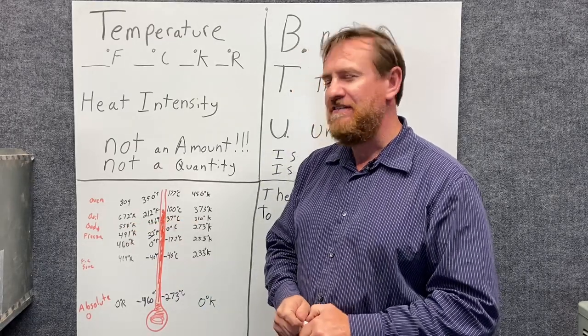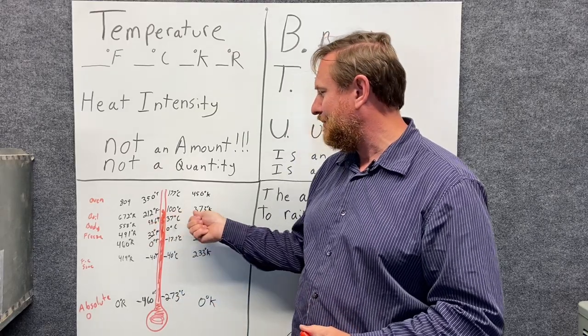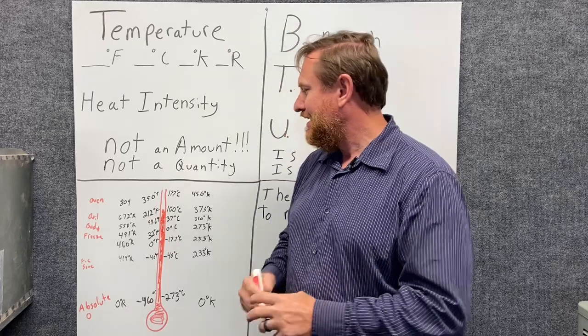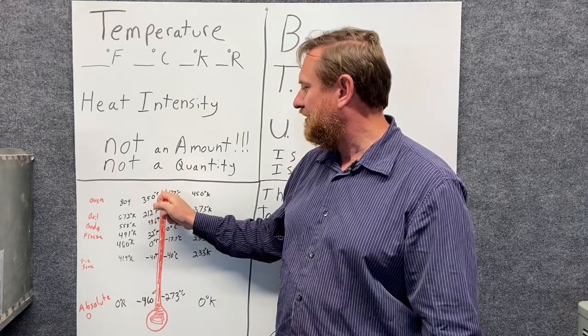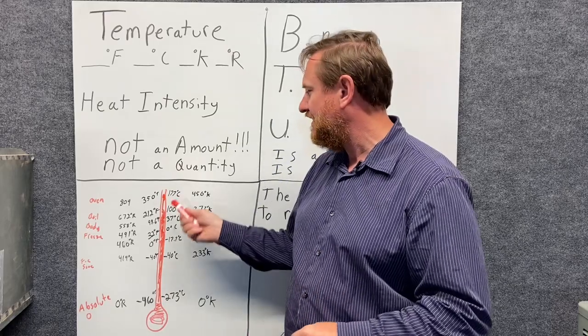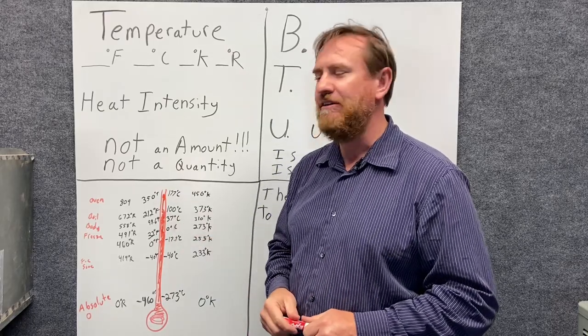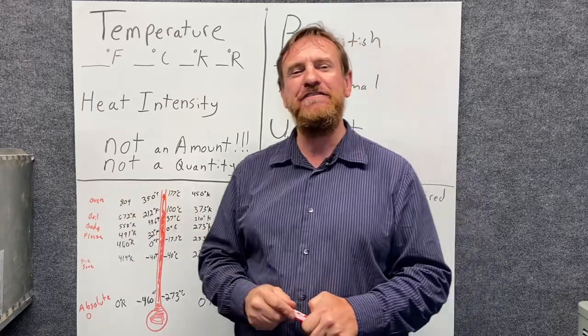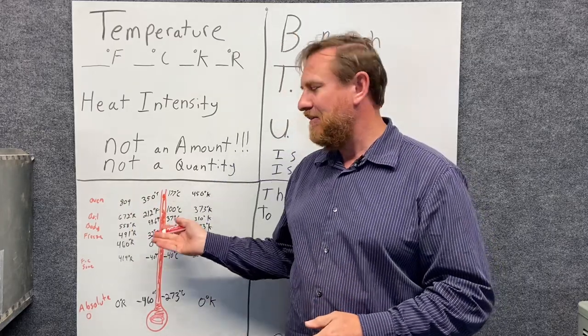Now if we wanted to put that in Rankine, that's 672 degrees Rankine. And that same exact boiling temperature is 373 degrees Kelvin. Now I've put one more number on here. I've put over here the typical oven temperature, 350 degrees Fahrenheit and 177 degrees Celsius. That would be 809 degrees Rankine and 450 degrees Kelvin.